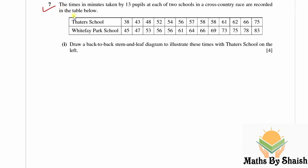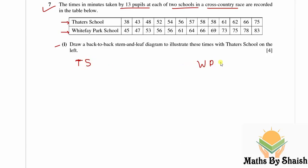Question 7 is the last question of the paper. The times in minutes taken by 13 pupils at each of two schools in a cross-country race are recorded. The two schools are Theater School (TS) and Whitefish Park School (WPS). Part one asks us to draw a back-to-back stem and leaf diagram with Theater School on the left.